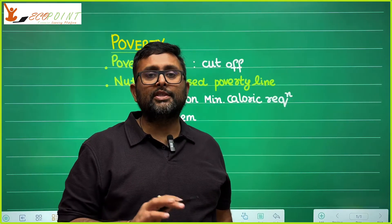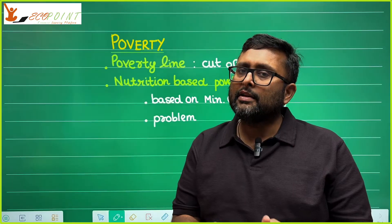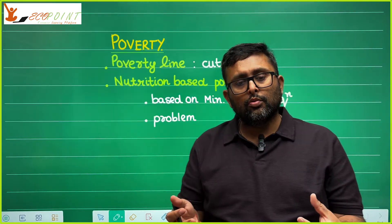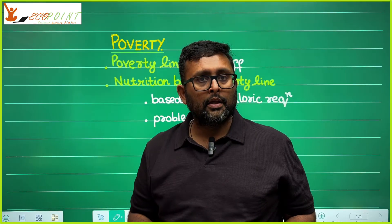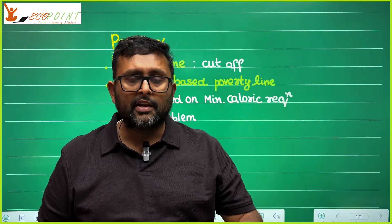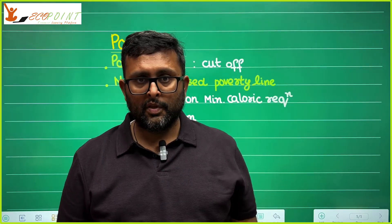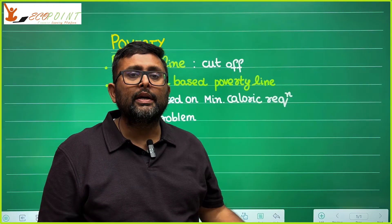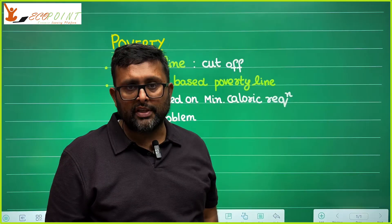In India, we have nutrition-based poverty lines. When we talk about nutrition-based poverty line, we mean what is the expenditure which is required to have the minimum caloric requirement. When you eat something, you consume calories. What is that minimum caloric requirement which is going to keep you healthy, and what is the expenditure required to have that? If you do not have that income or are not making that expenditure, you will be considered poor. But the main problem with nutrition-based poverty lines is that nutrition doesn't unambiguously increase with income.